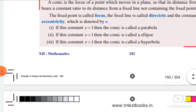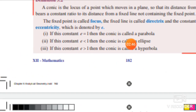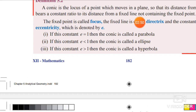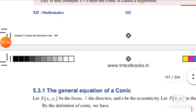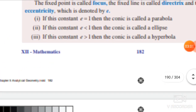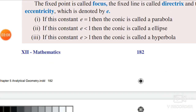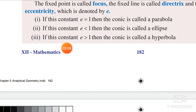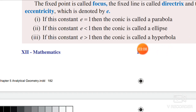For conics, let's see how many types there are. When SP by PM equals 1, that is e equal to 1, the conic is called a parabola. When e is less than 1, the conic is called an ellipse. When e is greater than 1, the conic is called a hyperbola. So parabola, ellipse, and hyperbola — these are what we will see in exercise 5.2.